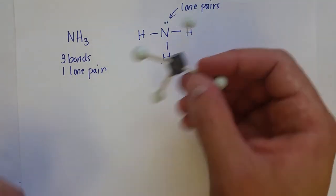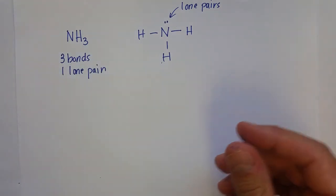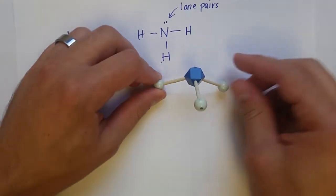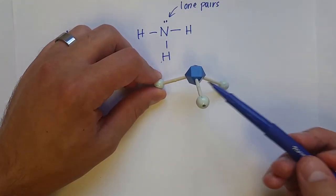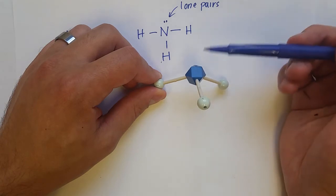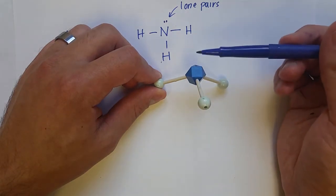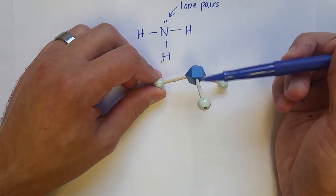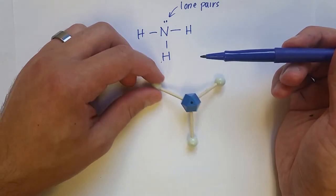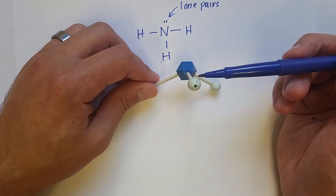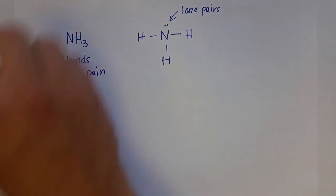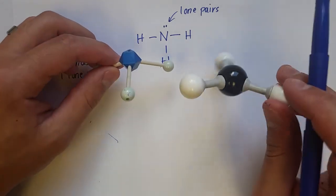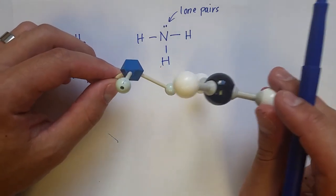And so when we take away the lone pair of electrons and think about just where the atoms are at, ammonia turns out to look like that, where the nitrogen is bonded to three hydrogen atoms, and the lone pair is not pictured, but it would be right here. That's very important to note that those lone pair electrons are still there because that's what's repelling these hydrogen atoms into this shape, into a different plane. If there was just three atoms and not three bonds and a lone pair, it would take on a trigonal planar shape, which is, of course, different than this structure.